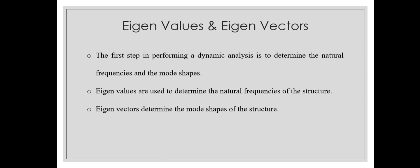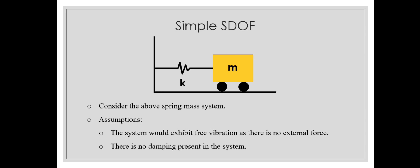The first step in performing a dynamic analysis is to determine the natural frequencies and mode shapes. That's where eigenvalues and eigenvectors come into play. Eigenvalues are used to determine the natural frequencies of the system, and eigenvectors determine the mode shapes of the structure. Let's consider a simple single degree of freedom system and determine the eigenvalue and eigenvector, and consequently the natural frequency and mode shapes.